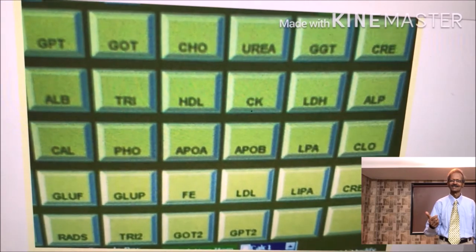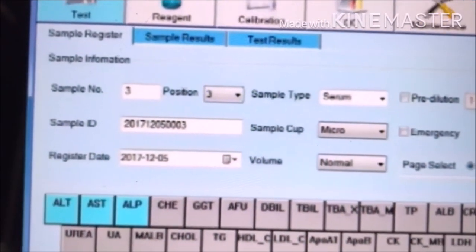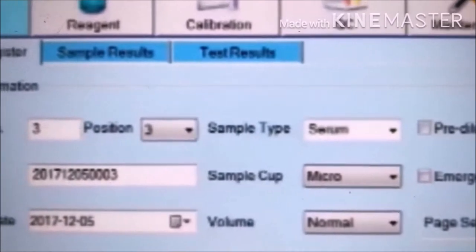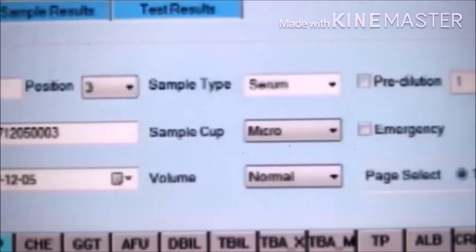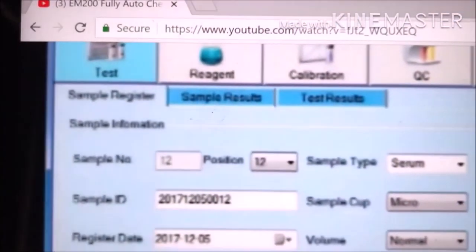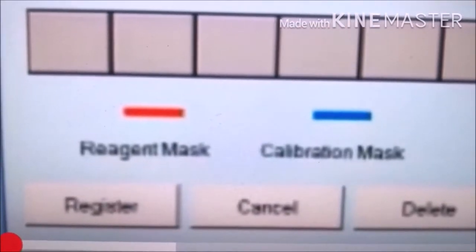This is how patient data is entered: patient number 3, test ALT, AST and ALT, sample number, position number, sample type and then sample ID and date. Select all this information. For emergency samples, use this emergency mode and then sample number and position number. Select test for the emergency sample. Register the emergency sample and also register the batch mode.